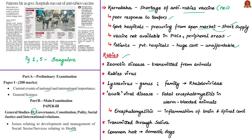Rabies is a zoonotic disease — transmitted from animals to humans — caused by the Rabies virus, which belongs to the Lyssavirus genus within the family Rhabdoviridae. It is an acute viral disease that causes fatal encephalomyelitis in all warm-blooded animals, including humans. Encephalomyelitis means inflammation of the brain and spinal cord caused by acute viral infection. Warm-blooded animals, including mammals and humans, maintain a constant body temperature regardless of the environment.